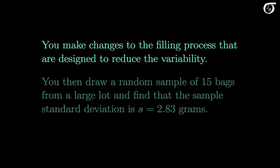You make changes to the filling process that are designed to reduce the variability. You then draw a random sample of 15 bags from a large lot and find that the sample standard deviation is 2.83g. So the sample standard deviation is quite a bit less than 5g, the upper bound your boss gave you. Based on this value, we have a little evidence that the true standard deviation is less than 5g. But as is always the case in statistics, there is some uncertainty associated with our estimate. Does this data give strong evidence that the true standard deviation is less than 5g?